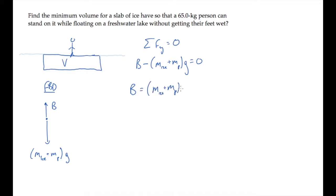Now we need to use this expression to solve for the volume, V, of the slab of ice. First, we can recognize that the buoyancy force equals the weight of the displaced fluid. So that's the weight of the displaced water, where the mass of the displaced water is its density times the volume.